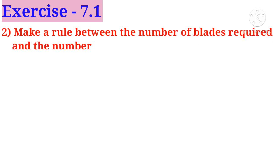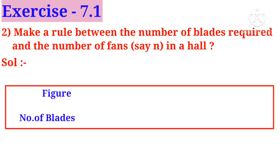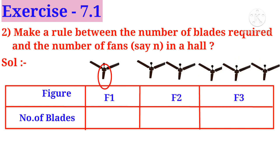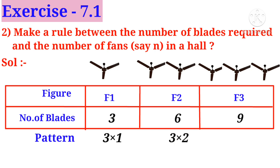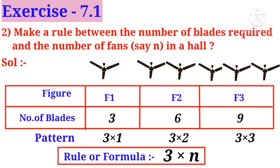Number two: make a rule between the number of blades required and the number of fans, say n, in a hall. Solution: in first figure, one fan has three blades; in second figure, two fans have six blades; in third figure, three fans have nine blades. The pattern is: 3×1, 3×2, 3×3. The first number three is constant and the second numbers are changing. So the formula is three into n.